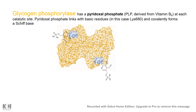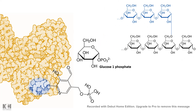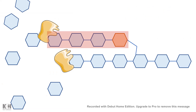At the active site of glycogen phosphorylase, the oxygen from the alpha-1,4 glycosidic linkage gets protonated, and then undergoes a nucleophilic attack from the phosphate group itself. This converts glucose into glucose-1-phosphate, leaving the glycogen with one less glucose residue. Progressively, this degrades the glycogen polymer into glucose-1-phosphate residues.